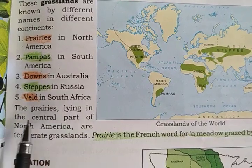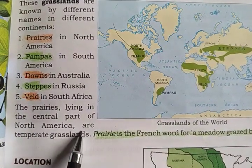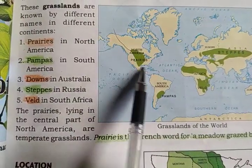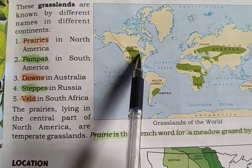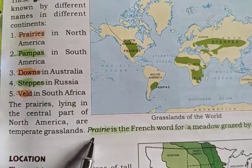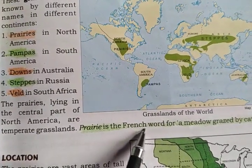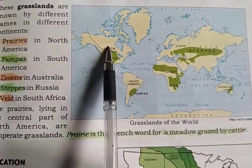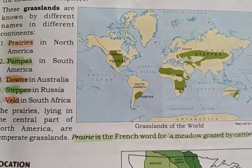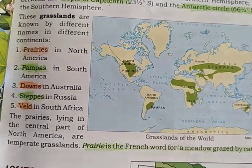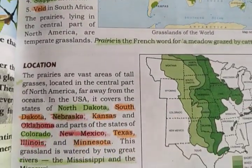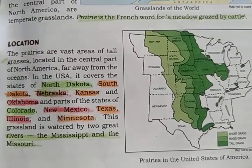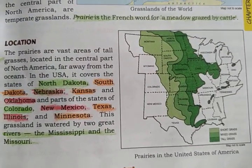The prairies lying in the central part of North America are temperate grasslands. Prairie is the French word for a meadow — grass grazed by cattle — meaning a long grassland. Now let's go to the location of the prairie region.